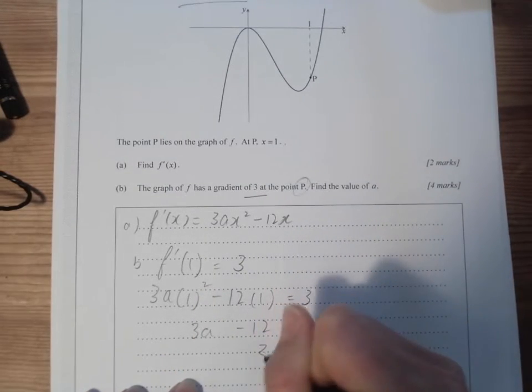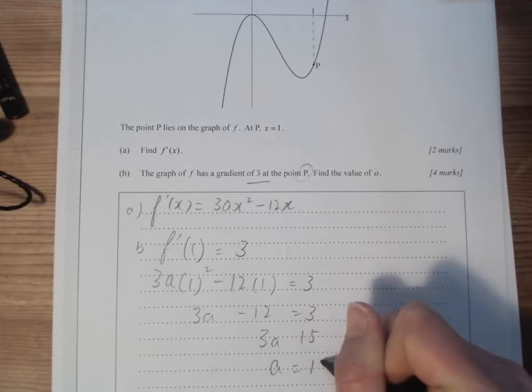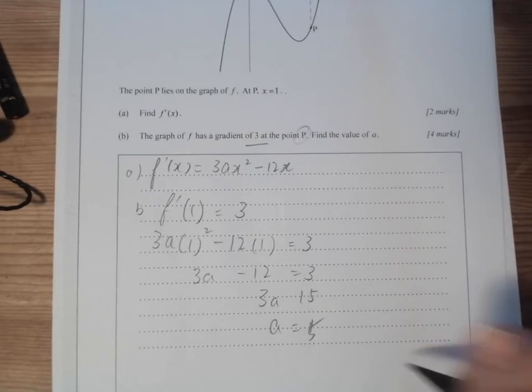Throw it to the other side, we got 3a equals 15, so a equals 5. Oh, is that it? Pretty handy!